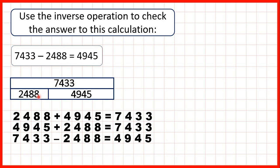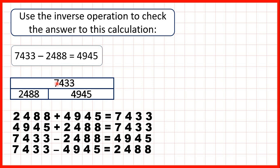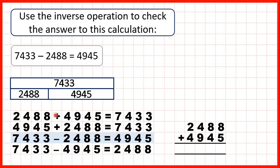This bar model also tells us the subtraction we were given: if we have our total and subtract one of the numbers in the bars below, we get the other number. So if we start with 7,433 and subtract 4,945, we should get 2,488. If we take our minuend and subtract our difference, we should get our subtrahend. We were given a subtraction calculation, so using the inverse operation to check means doing one of the addition calculations. Let's work out 2,488 plus 4,945.